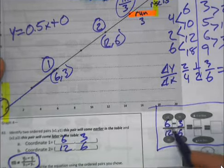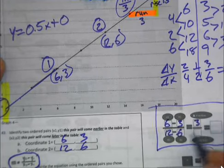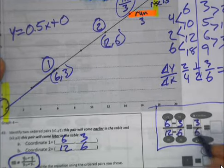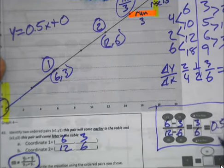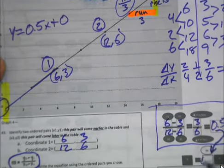3 divided by 6 is 0.5. And now you have your M, 0.5.